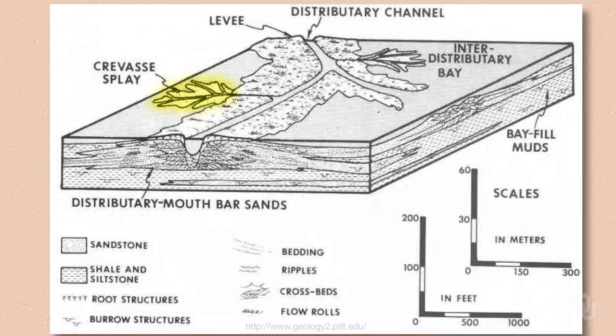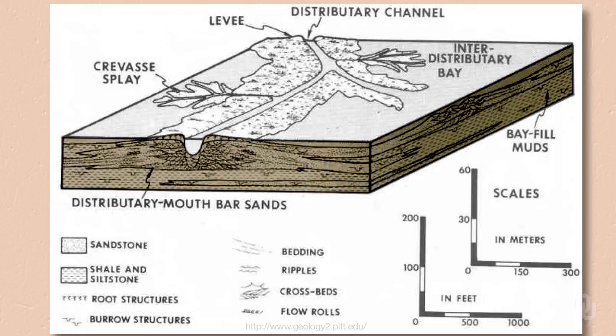Breaching occurs during major floods, and the sand and water then spread out into the interdistributary bay. In the block diagram, you can also see the various rock types and some of the sedimentary structures that are found in these delta environments.